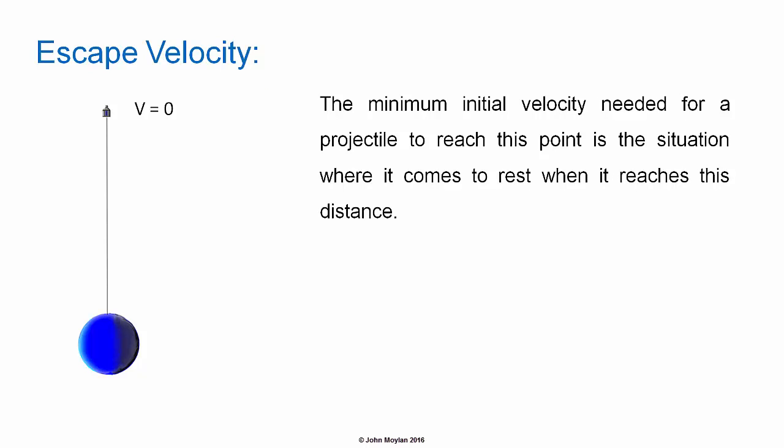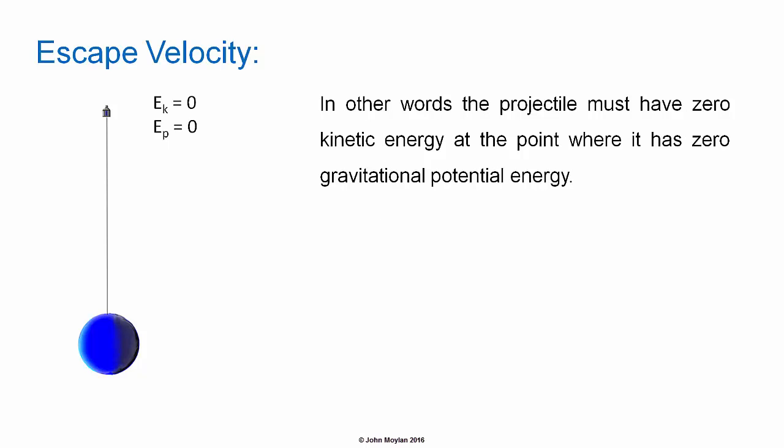The minimum initial velocity needed for a projectile to reach this point is the situation where it comes to rest when it reaches this distance. So the projectile has just enough velocity to reach the point at which gravitational potential energy is equal to zero, and come to rest as it reaches that point. Therefore, the projectile must have zero kinetic energy at the point where it has zero gravitational potential energy.